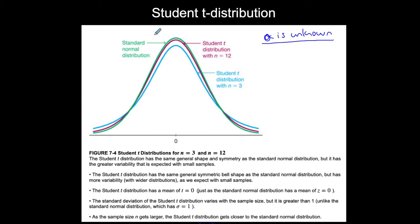The Student t-distribution is still symmetric and still bell-shaped. It has the same general shape and symmetry as the standard normal distribution, but it has greater variability. That's why we use it when sigma is unknown.